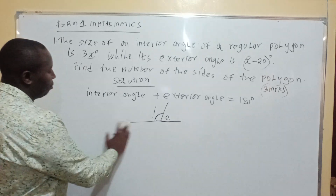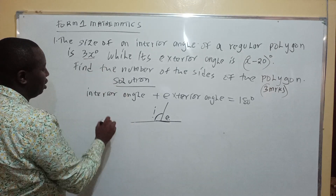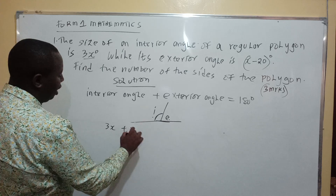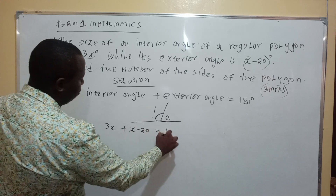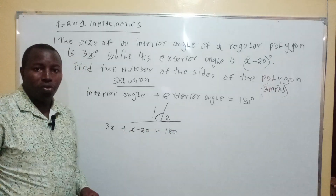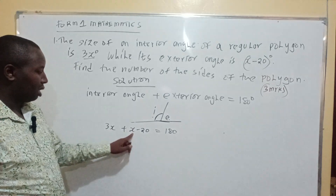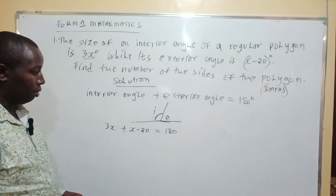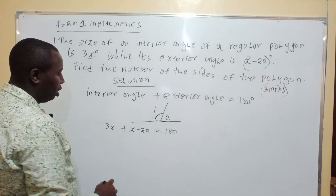So therefore you come to your equation. You have interior as 3x and exterior is x minus 20. You equate them: 3x plus x minus 20 equals 180 degrees.